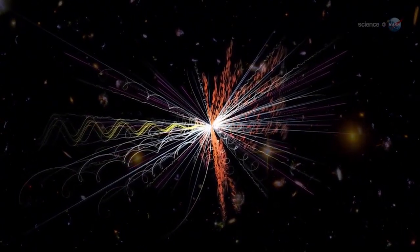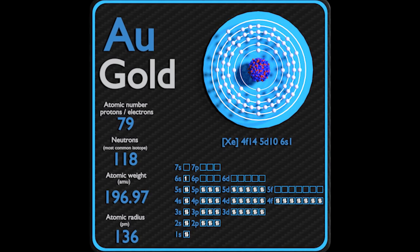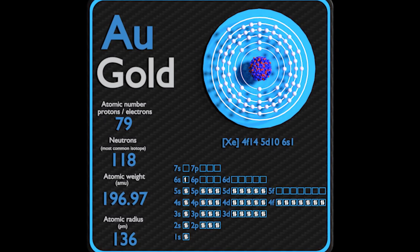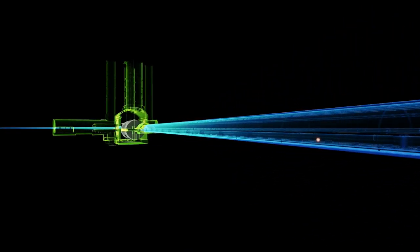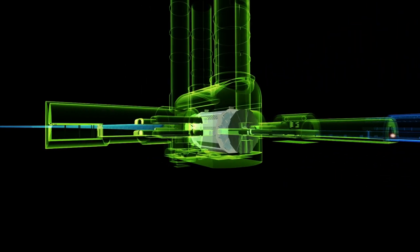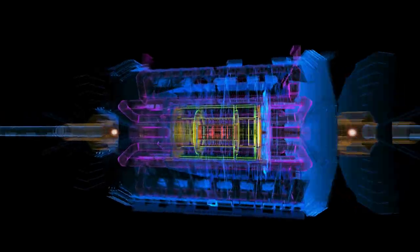An ion is essentially a naked atom, stripped of its electrons. A gold ion, with 79 protons, carries a powerful positive charge. Accelerating such a charged heavy ion to very high speeds generates a powerful magnetic field that spirals around the speeding particle as it travels, like current flowing through a wire.